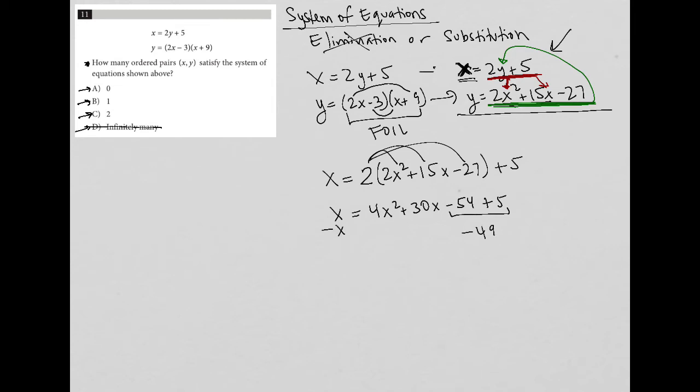I can subtract x from both sides, making this a 29x. And of course, I'd still have my 4x² here, and that would be equal to 0. So I'm going to just write that over on this side here. So I have 4x² + 29x - 49 = 0.